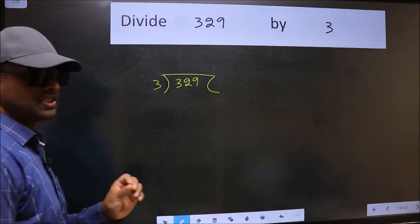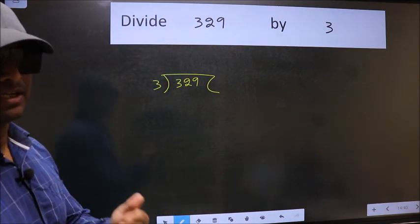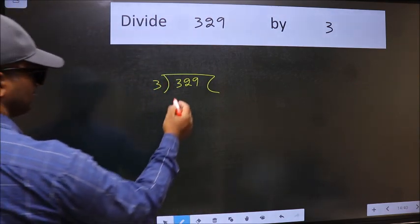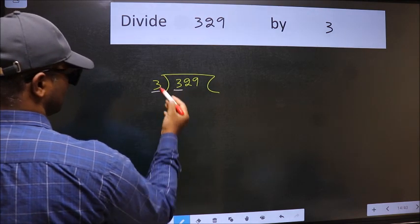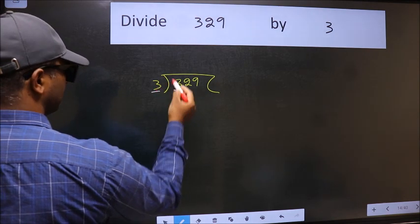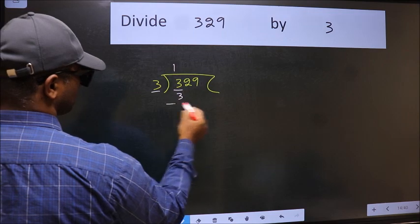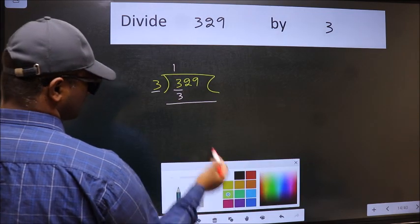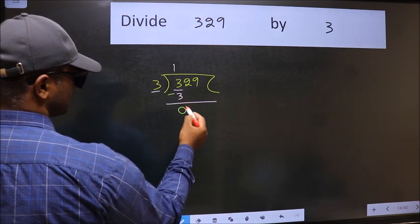This is your step 1. Next. Here we have 3. Here also 3. When do we get 3 in 3 table? 3 once 3. Now we should subtract. We get 0.